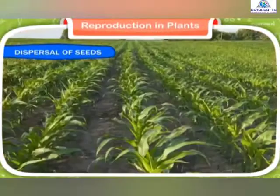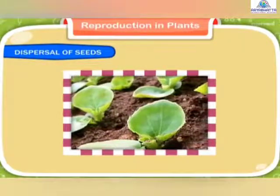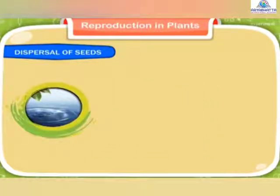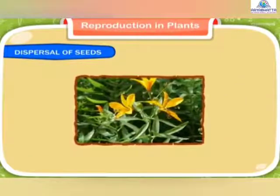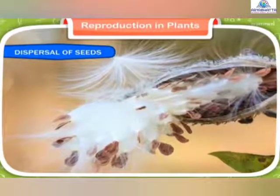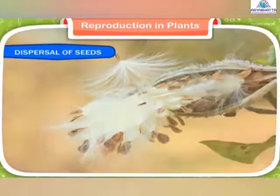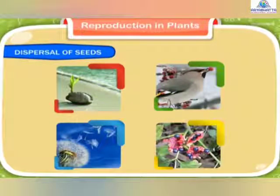Dispersal of seeds. Plants need adequate space to grow properly. If all of them grow under the parent plant and do not get enough space, many will die. When they do not get enough water, mineral salts, or sunlight, they will compete against each other and the weaker ones will die. That is why seeds need to be scattered away from the parent plants. This process of scattering or spreading of seeds to different places is known as dispersal of seeds. Dispersal of seeds happens in four ways: through water, wind, animals, and explosion of the fruit. These are known as agents of dispersal.